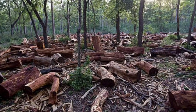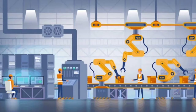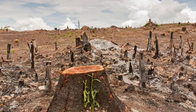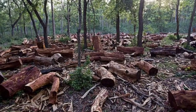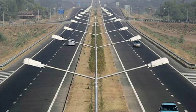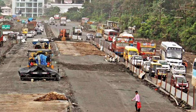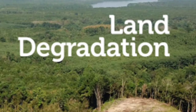Causes of deforestation: first, more and more trees are cut down to meet the growing demand for wood and other forest products by industries. Second, more and more trees are cut down due to increasing demand for land by a rapidly rising population to build houses. Third, more and more trees are cut down due to development activities like construction of highways, railways, etc.